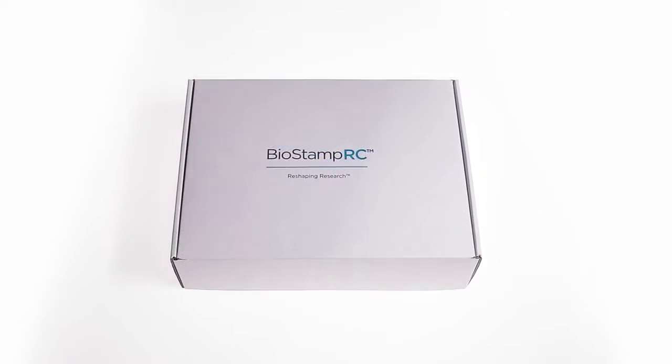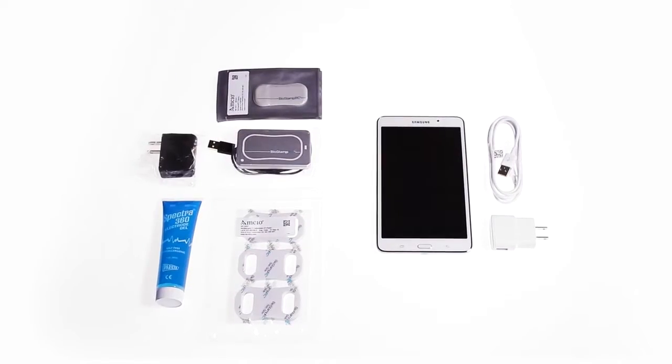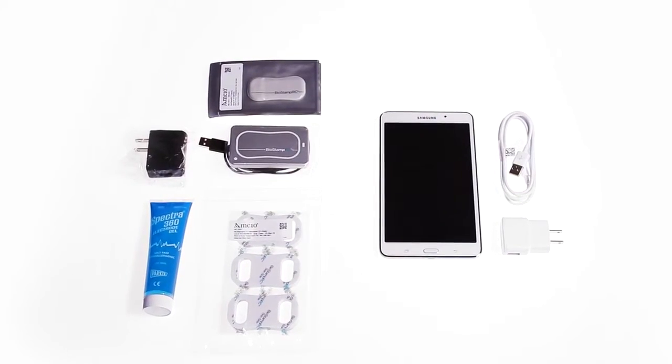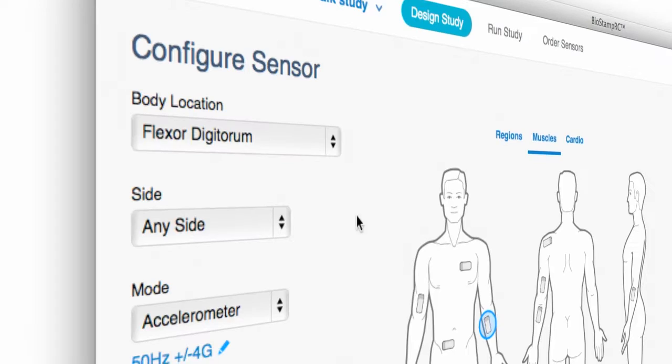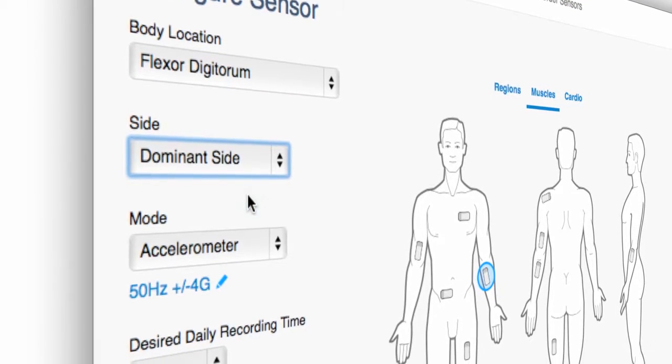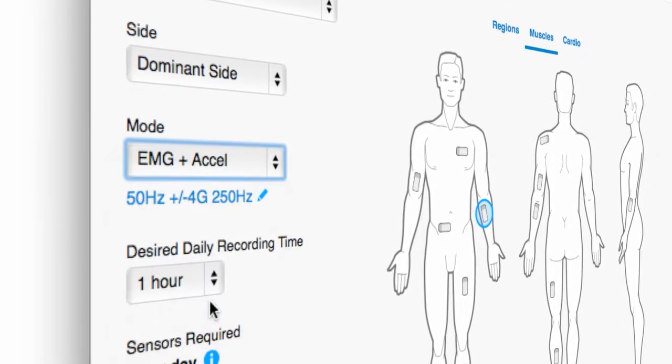The Biostamp RC kit includes all of the tools you need to execute your study. In the Investigator Portal, configure a study by choosing which body locations to monitor and the type of physiological data to record.